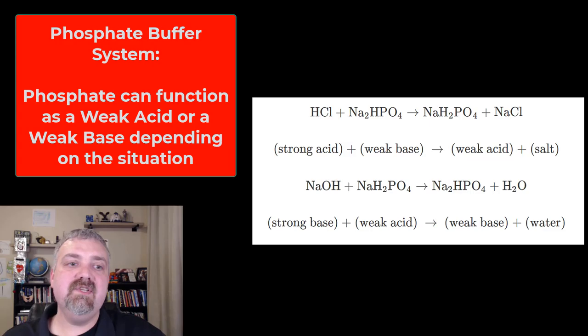Then lastly, the phosphate buffer system. Just remember this is the most important one in intracellular fluid and your urine. As you see here, phosphates are found in the body in different forms. One of them can behave like a weak base, one like a weak acid, and that's how it resists change to pH.